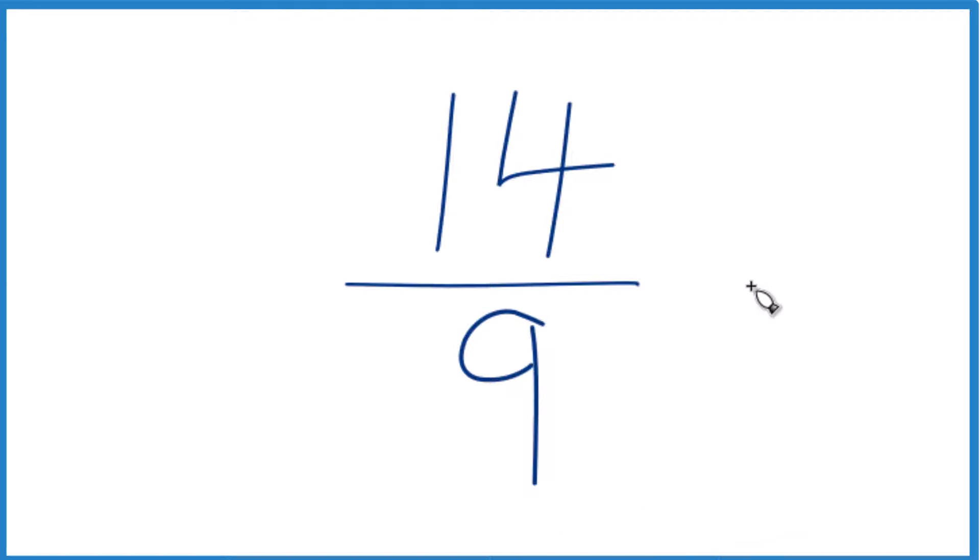But we can write it as a mixed number. That's because it's an improper fraction. 14, the numerator, is larger than nine, the denominator. So here's how we do it.